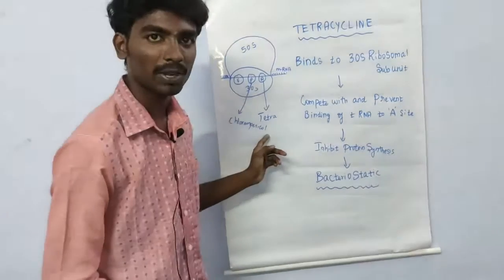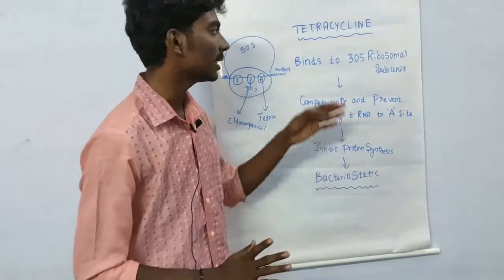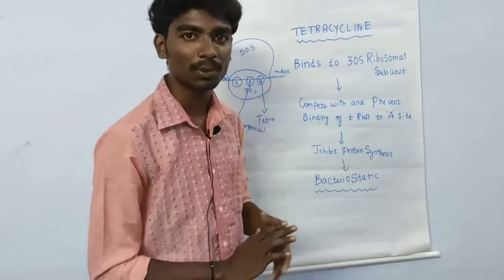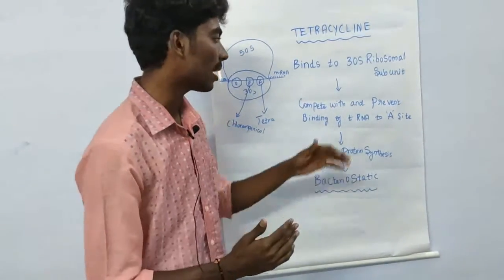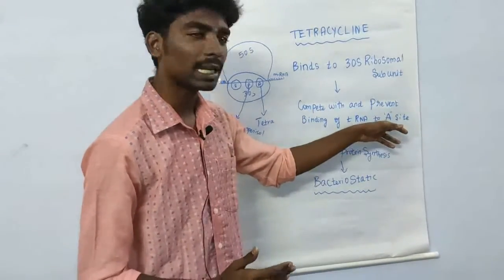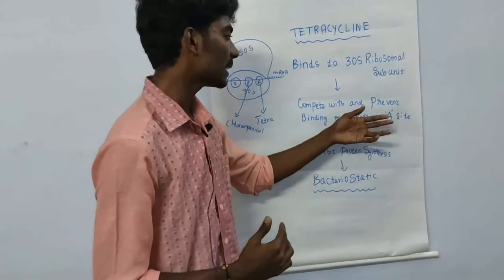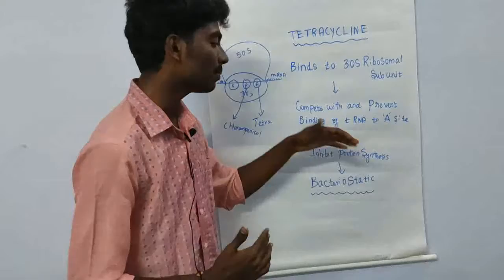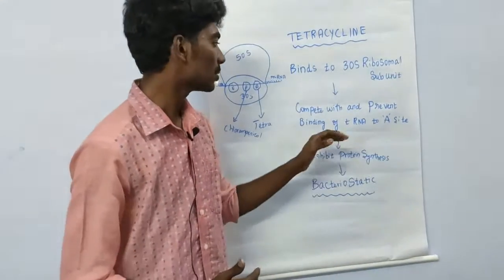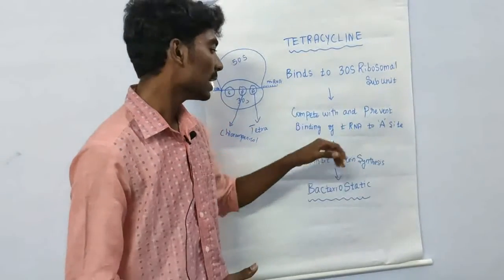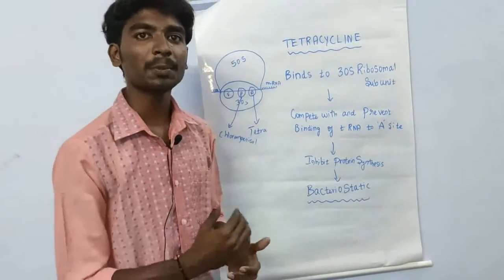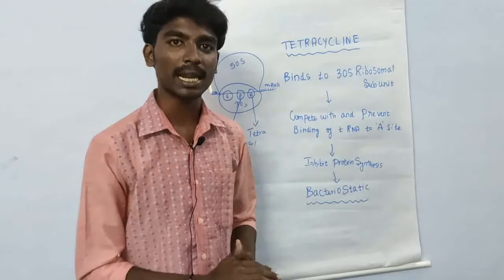A is tetracycline, P is chloramphenicol. Tetracycline mechanism first binds 30S ribosome subunit. It binds the binding of tRNA to A side. A side will bind the proteins inhibited. What action will produce? Bacteriostatic effect.